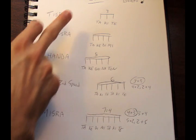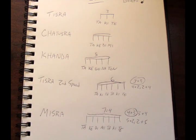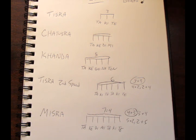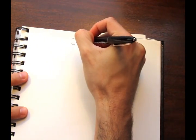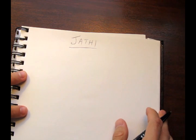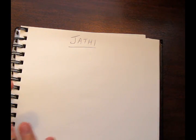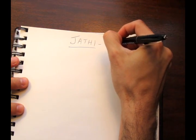I'm going to demonstrate one pattern going from slowest to fastest and back to slowest. So gati are our equal subdivisions of the beat. Now to create polyrhythmic ratios, we're going to use one more concept called jati — J-A-T-H-I. Jati are regular accents over the gati.